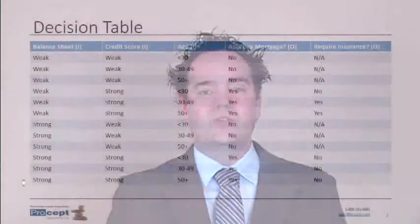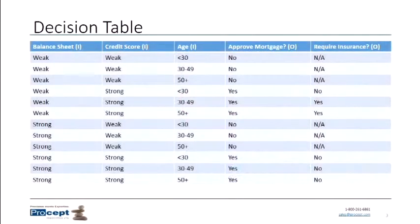We have two types of balance sheet — strong and weak — two credit scores — strong and weak — and three age ranges. When we multiply those out, two times two times three, that is how we get 12 possible combinations of the inputs.